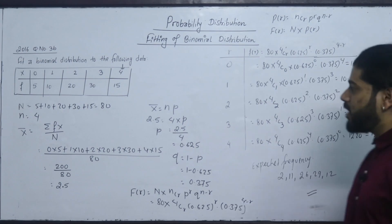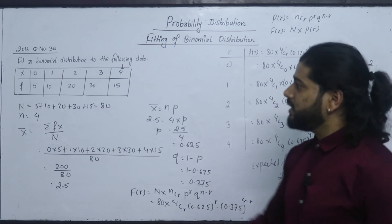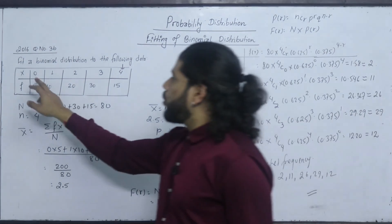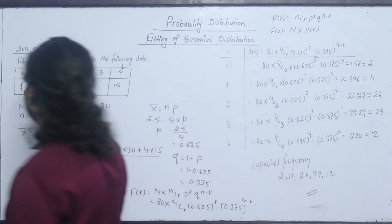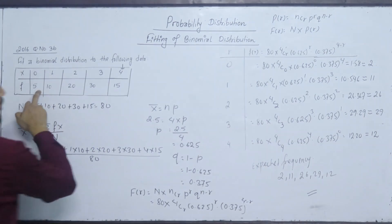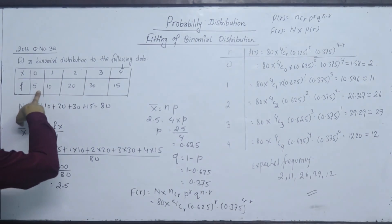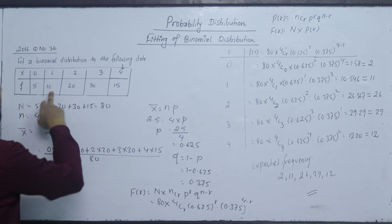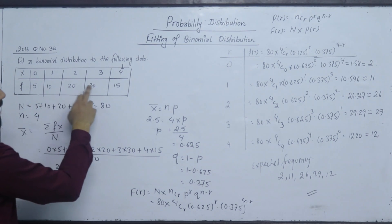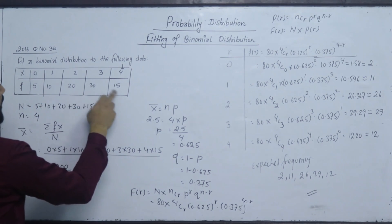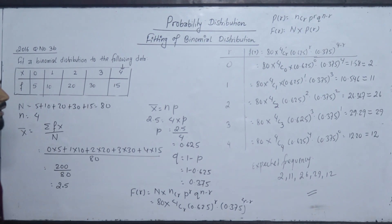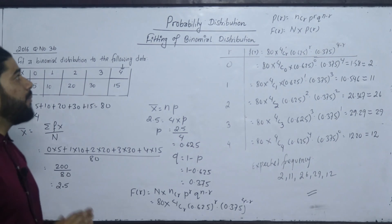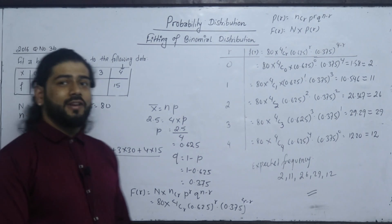So the fitted binomial distribution frequencies are: R equals 0 gives 0, R equals 1 gives 2, R equals 2 gives 11, R equals 3 gives 26, R equals 4 gives 29. This is the binomial distribution fitting.